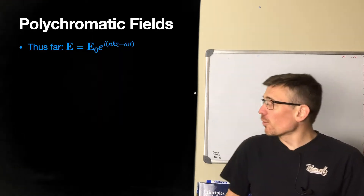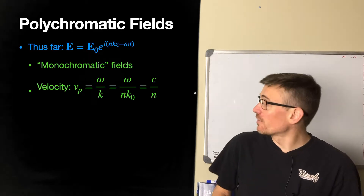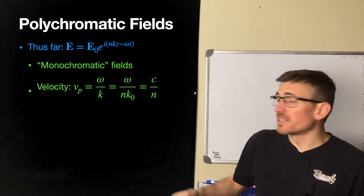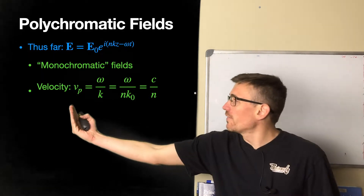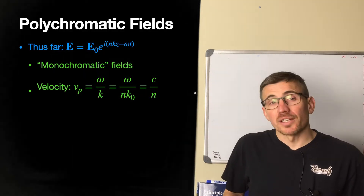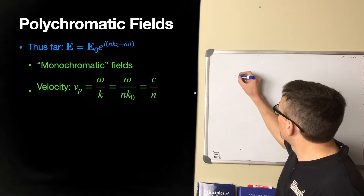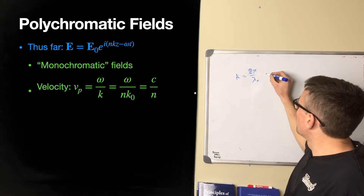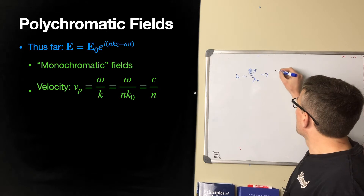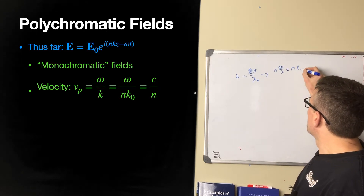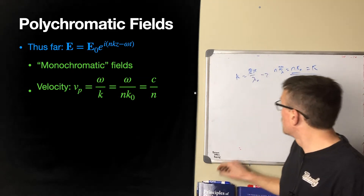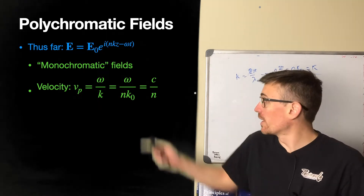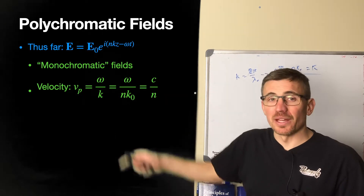What do I mean by polychromatic fields? Before we had our nice plane wave with a single frequency — we called that a monochromatic field: one color, one frequency. We found that since it satisfied the wave equation, we have the phase velocity, the velocity of a phase front as it propagated, given by omega over k. In free space, k equals 2π over lambda naught. In a medium, lambda goes to lambda over n, so k becomes nk naught. The velocity becomes omega over nk naught, which is c over n — stuff we already knew from Snell's law.